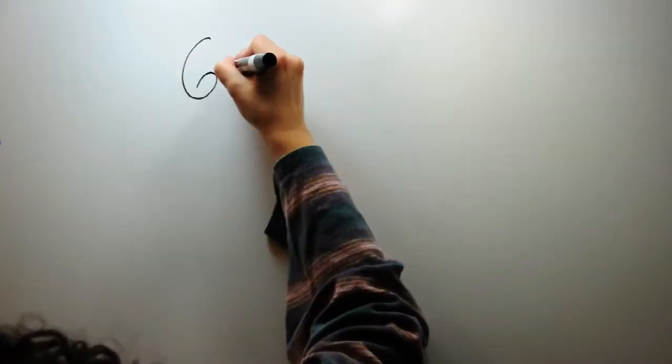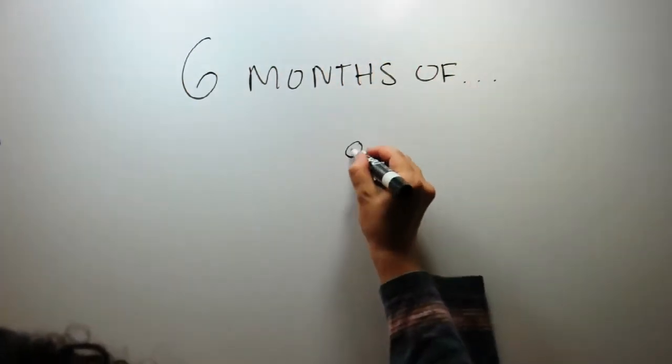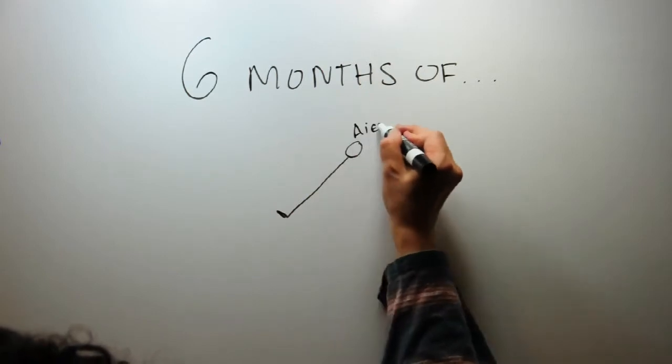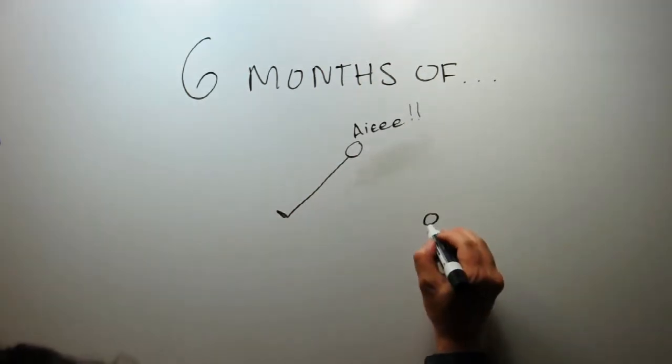But for me, the last six months have been a constantly ramping combination of fear and excitement. Fear? Because this process is essentially a month-long trust fall. Excitement? Because this process is basically a month-long trust fall.